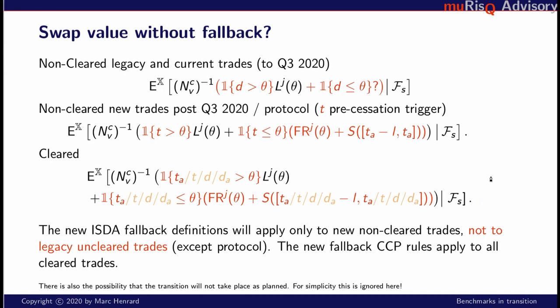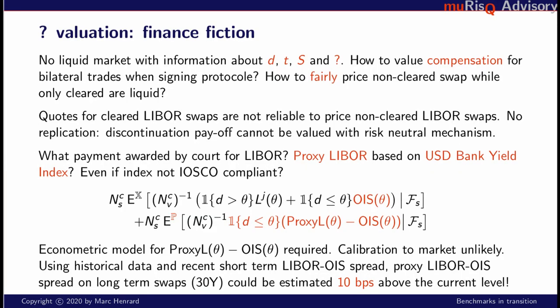What we want to look at is the difference between these formulas. The big one is the question mark, and also the discontinuation date. If we try to put that into numbers, we don't have that information. The question mark, the discontinuation date, the trigger date, and to some extent the spread — we don't have information about each of them individually. We have on the cleared market all of them together in a certain way, but not each piece individually. We also know from the previous formulas that there is a large difference between the new definition and the old one — that's why we move to the new one, because we don't trust the existing fallback mechanism.